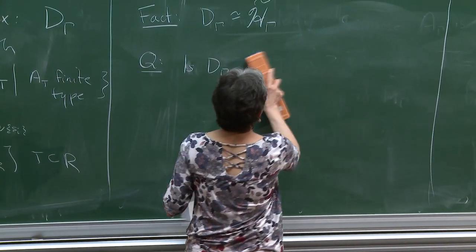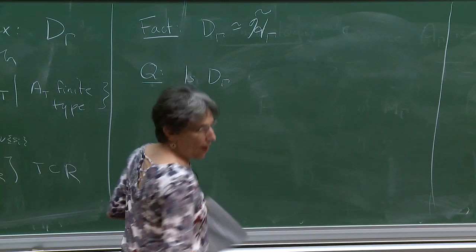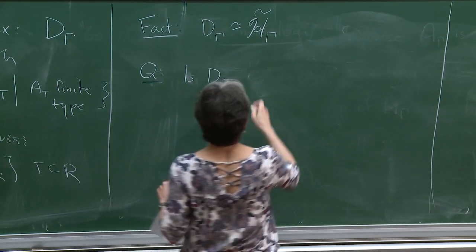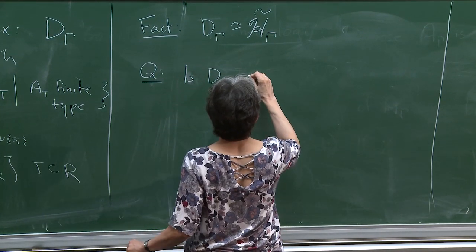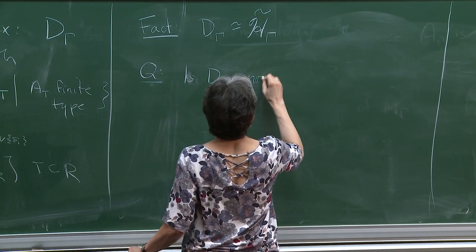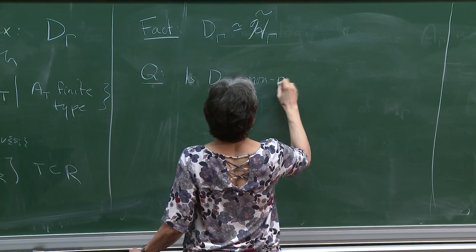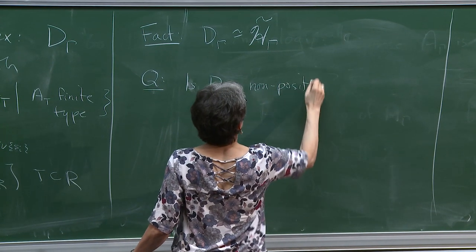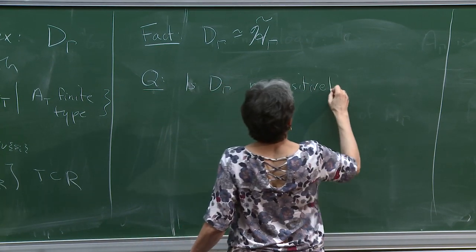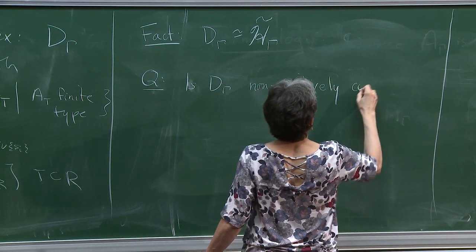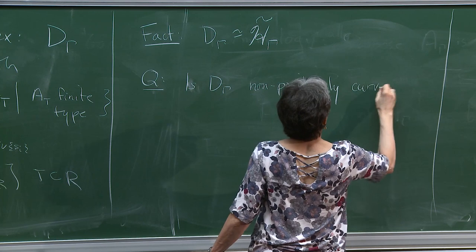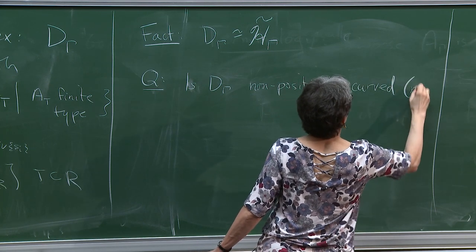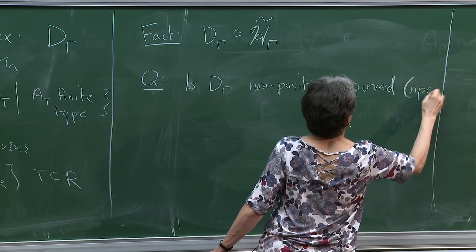We do want to know if D(γ) is CAT(0), but what we're actually going to check is whether it's non-positively curved. Is D(γ) non-positively curved?